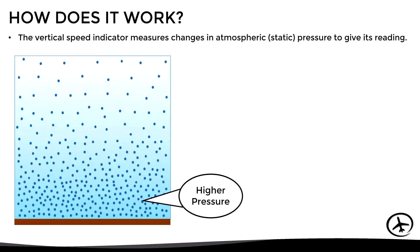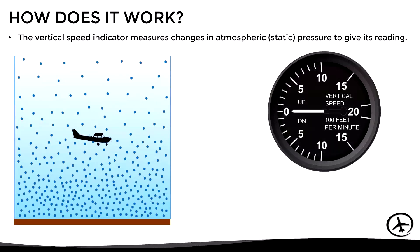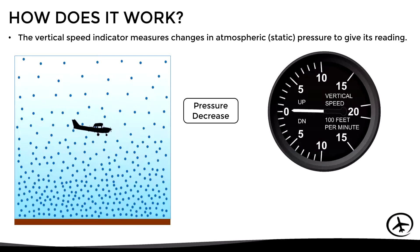At lower altitudes there is a higher pressure, while at higher altitudes there is a lower pressure. With this in mind, if there are no static pressure changes it means the aircraft is in level flight, and therefore the VSI will indicate zero feet per minute. On the other hand, if the aircraft starts climbing, the pressure will gradually reduce and the instrument will interpret it as an altitude increase.